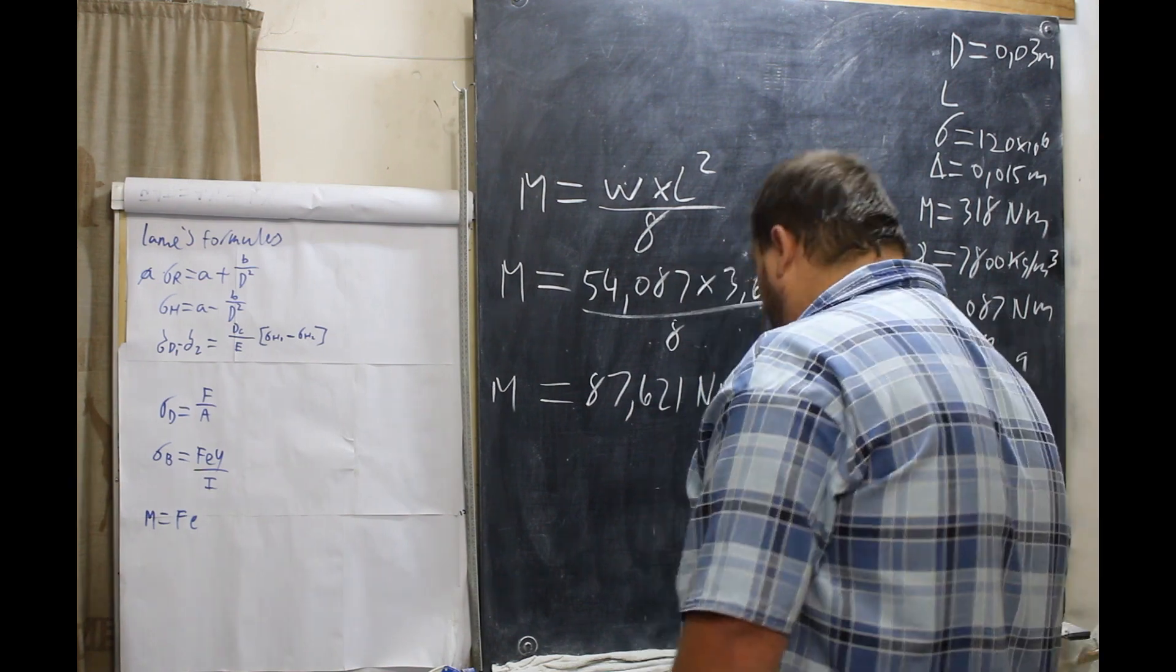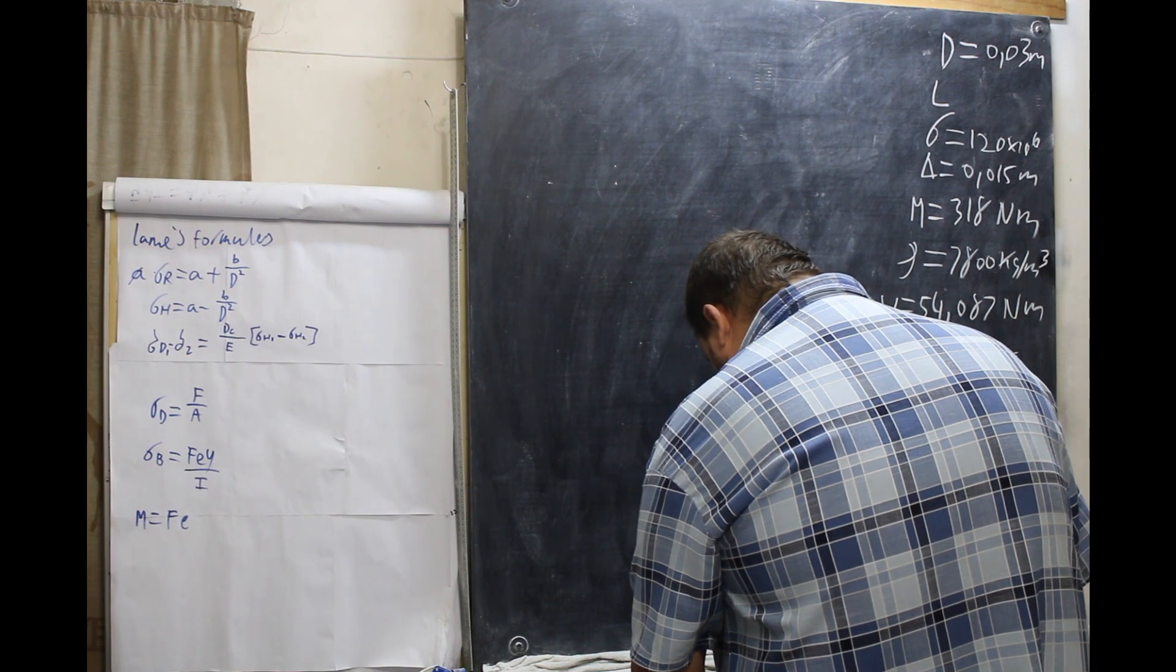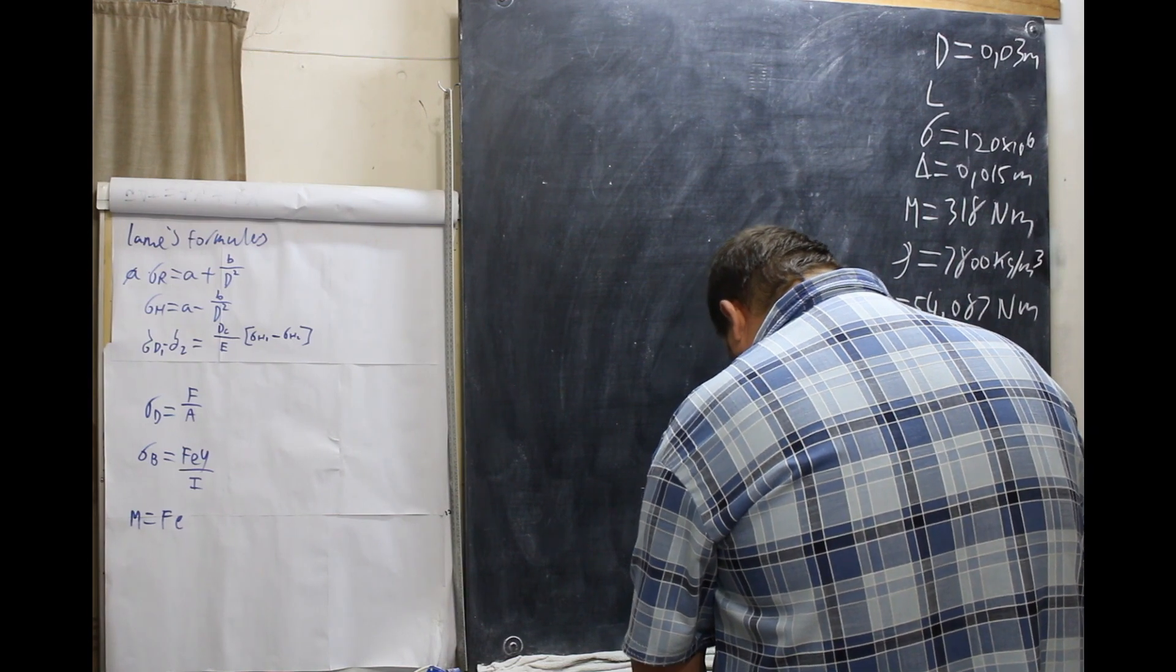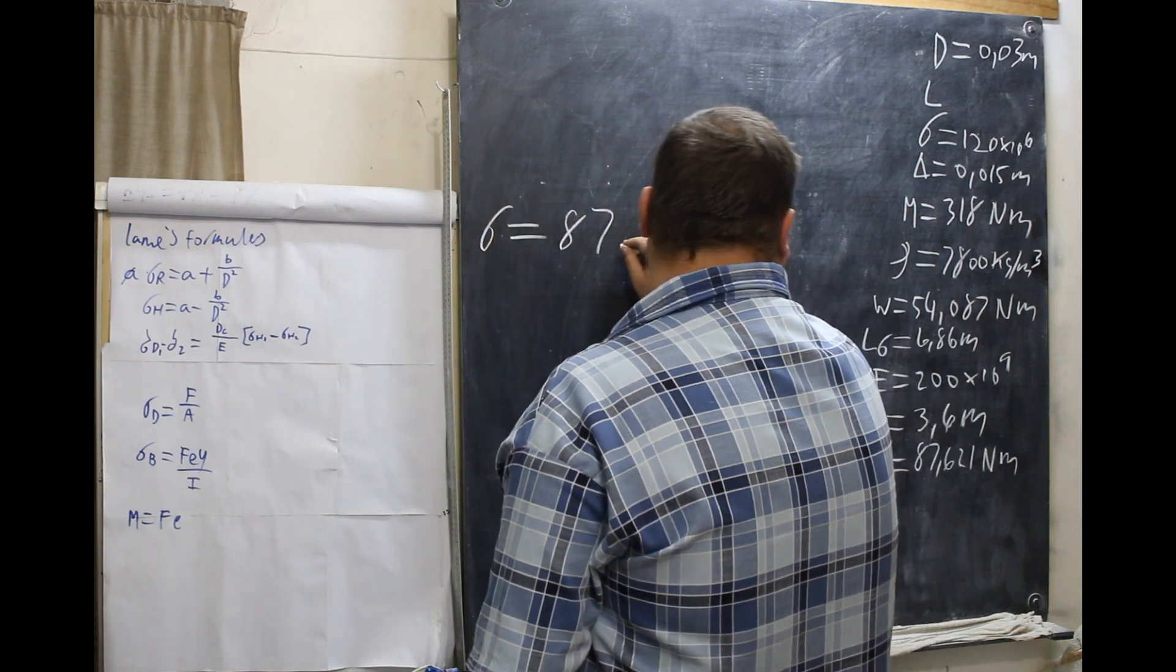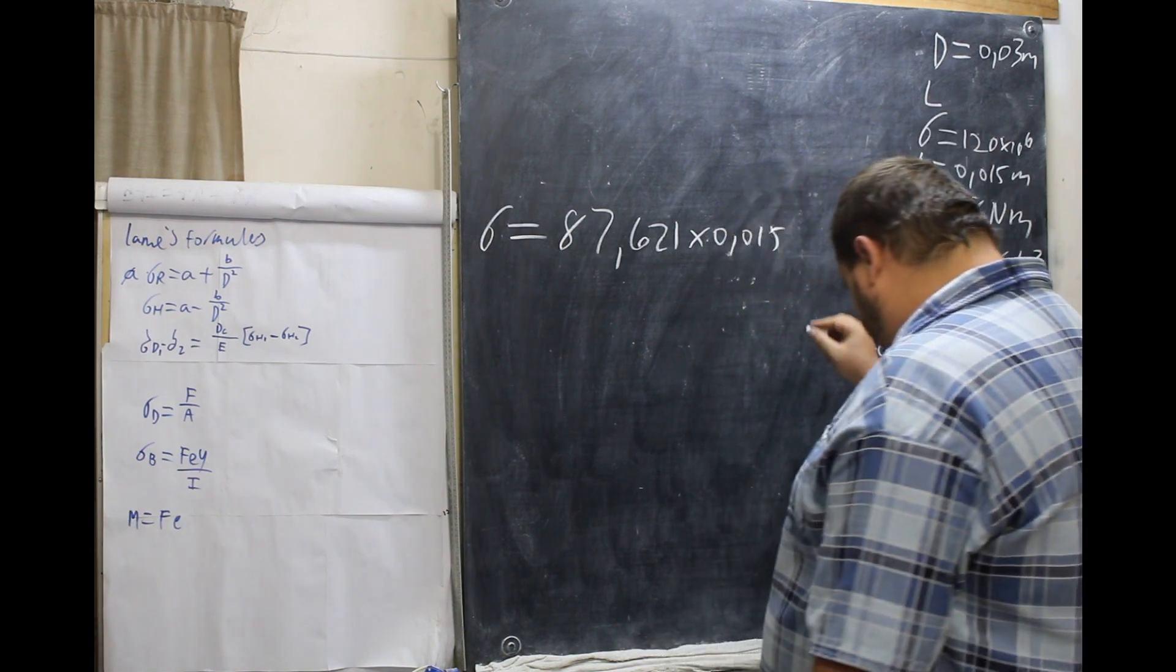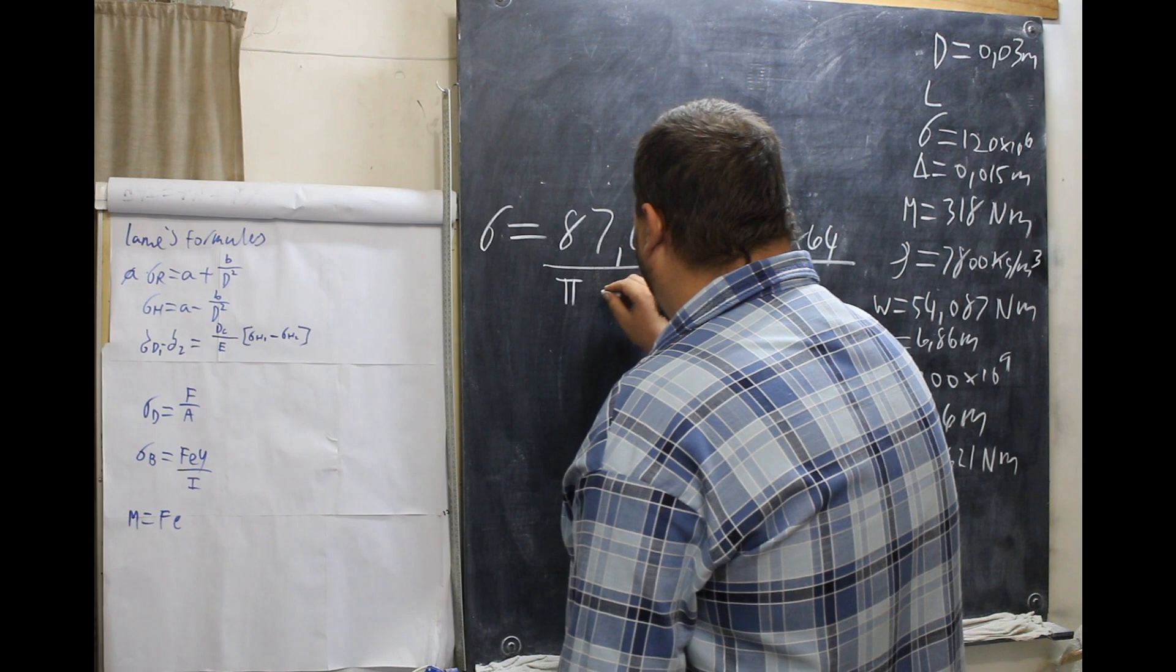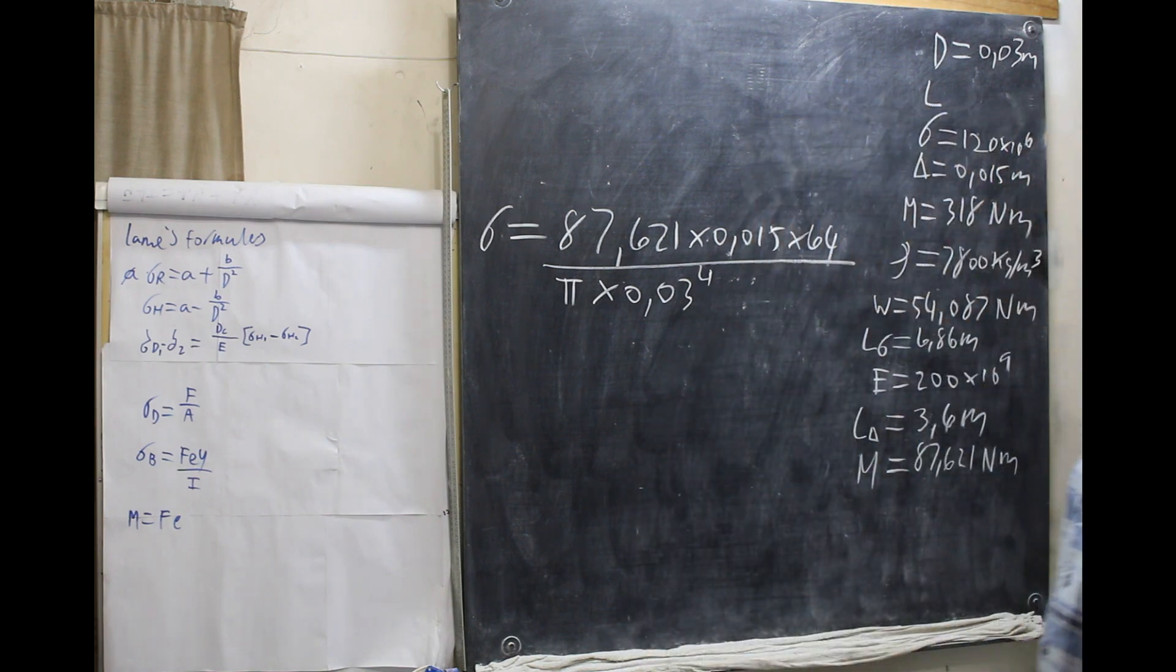So, now our stress for our formula. We're just going to put it in our previous formula. So, stress is equal to 87,621 times 0.015 times 64 all over pi times 0.03 to the power of 4. That's manipulated and got our numbers in.